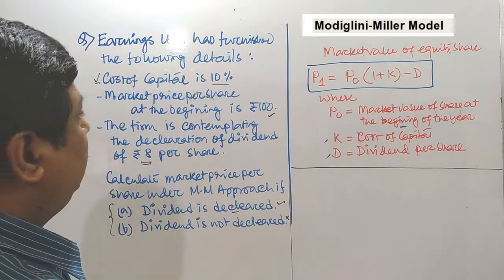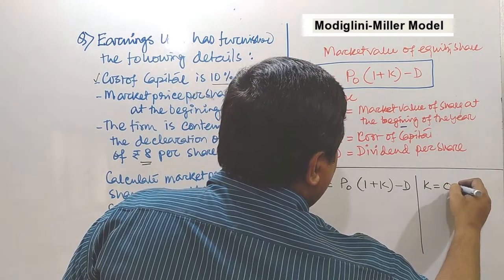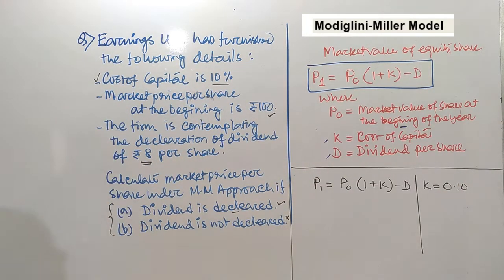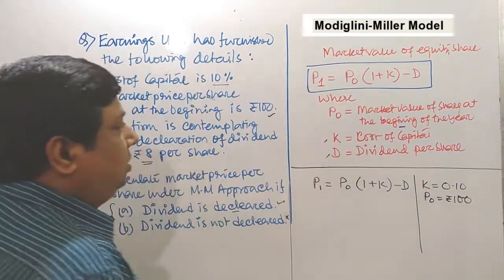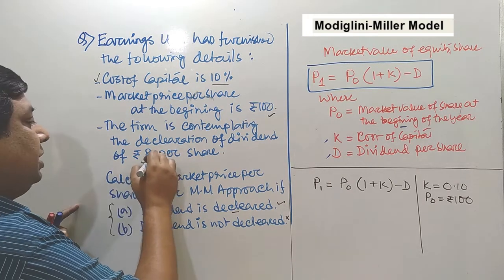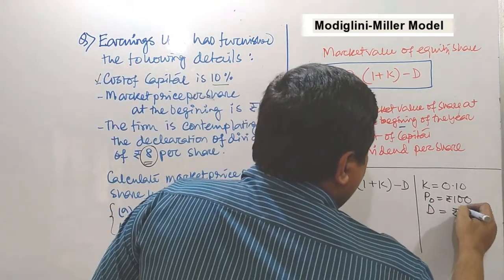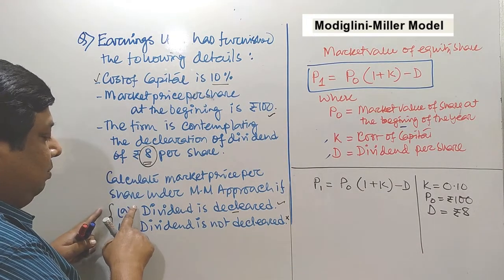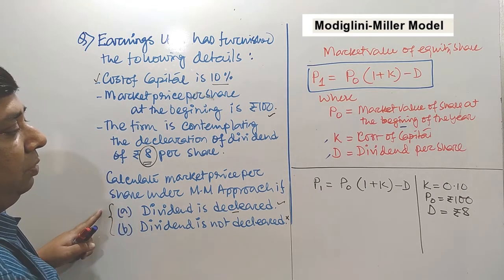Let's jot down the data one by one. Cost of capital K is 10%, or 0.10. Market price per share at the beginning, P0, is Rs.100. The firm is contemplating the declaration of a dividend of Rs.8 per share, so dividend D is Rs.8. The company is paying the dividend and based on that we are trying to calculate the market value under both options.